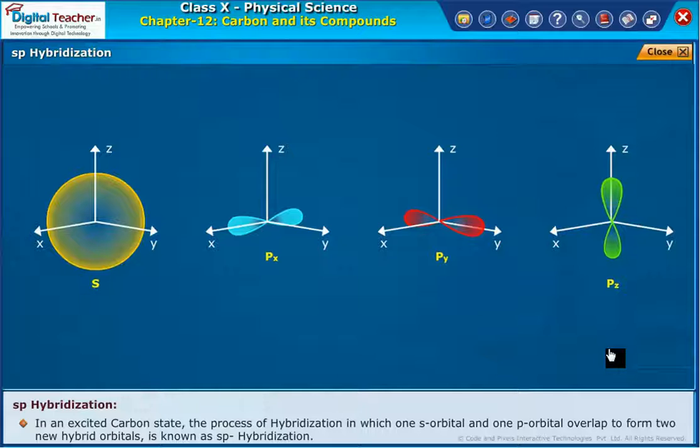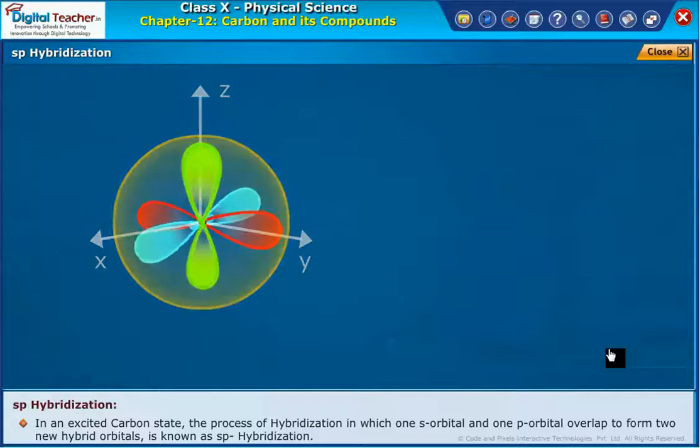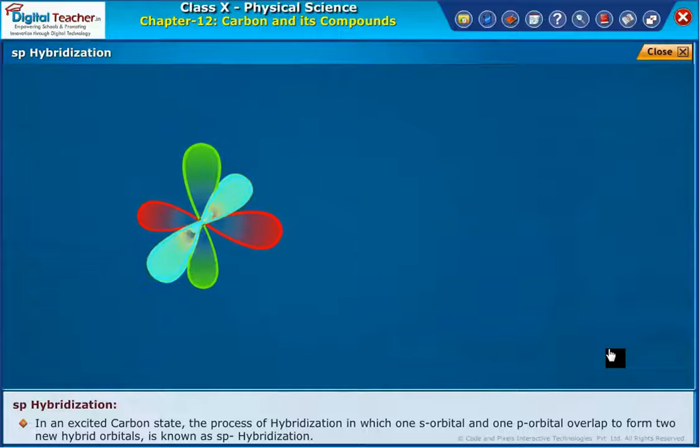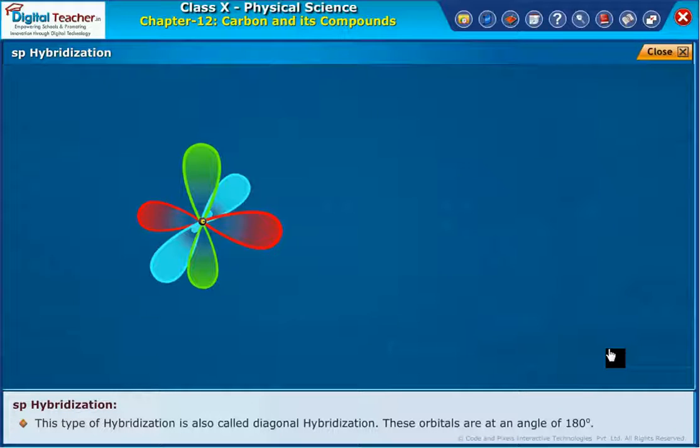In an excited carbon state, the process of hybridization in which one S orbital and one P orbital overlap to form two new hybrid orbitals is known as SP hybridization. This type of hybridization is also called diagonal hybridization.